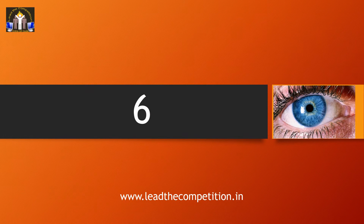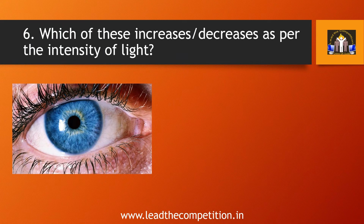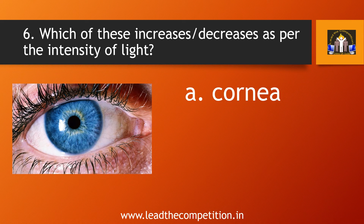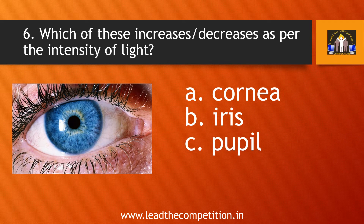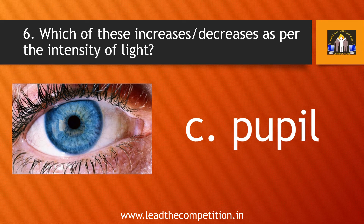Question number 6. Which of these increases or decreases as per the intensity of light? A. Cornea, B. Iris, C. Pupil, or D. Sclera. The answer is C. Pupil.